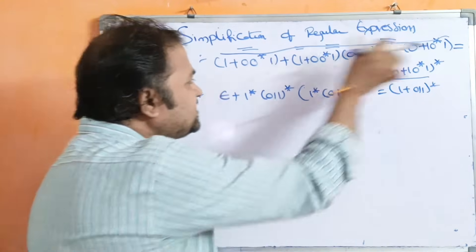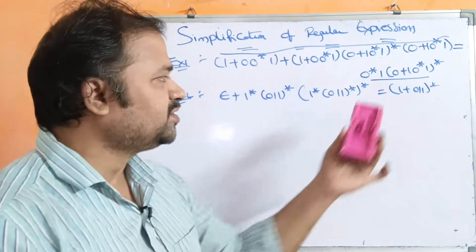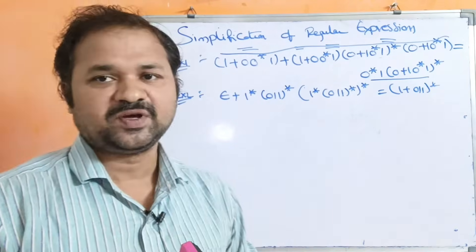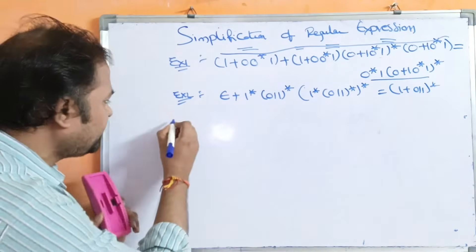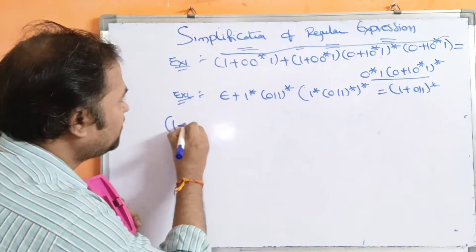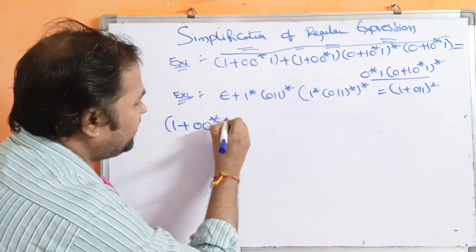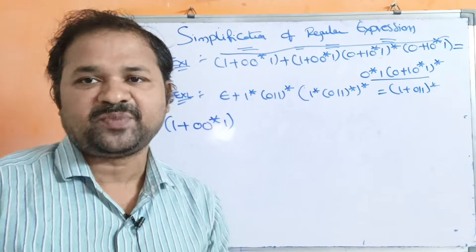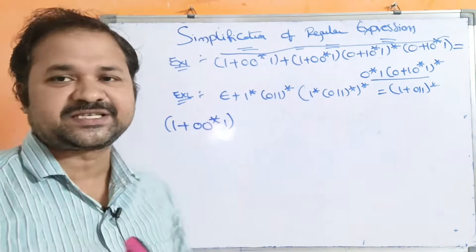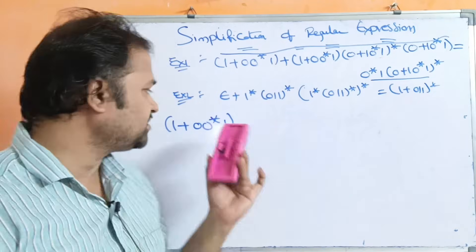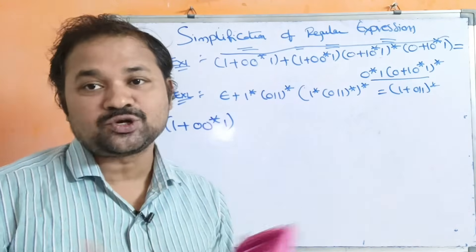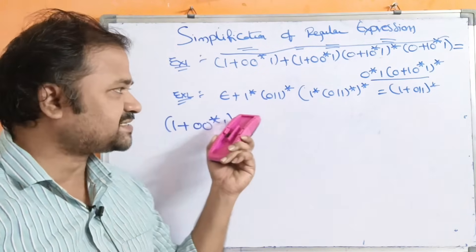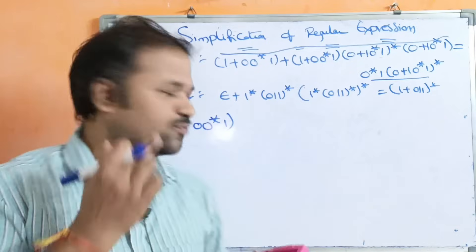We are simplifying this big regular expression into a smaller regular expression. Now let us solve the first example: (1 + 00*1). Here, plus means union operation, dot means concatenation operation, star means Kleene closure, and plus superscript means positive closure — for example, 0+ is called the positive closure.